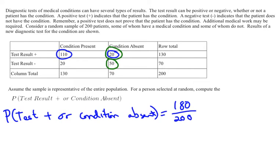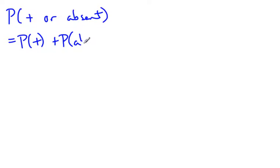The other way to do this is with the addition formula. So let's look at that. So again, we're looking at the probability of a test result positive or the condition absent. So that would be the probability of positive plus the probability of absent minus the probability of positive and absent.